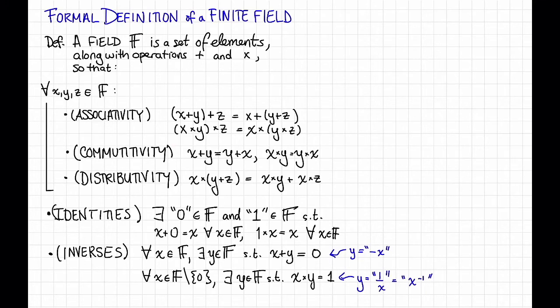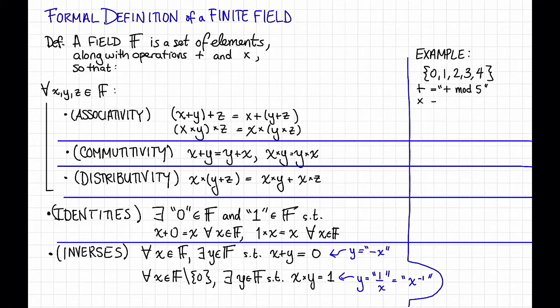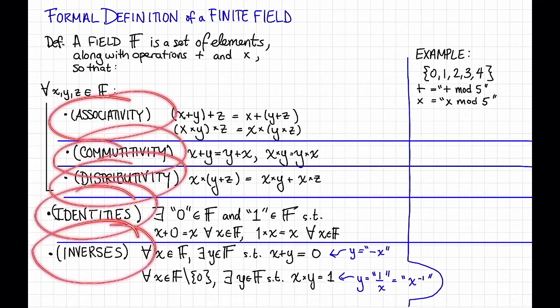This might seem pretty abstract, so let's step through an example. Here is an example of a field. An example is the numbers 0, 1, 2, 3, 4, with the relationships plus is just plus mod 5, and times is just times mod 5, so just all arithmetic mod 5. Now let's step through each one of these axioms.